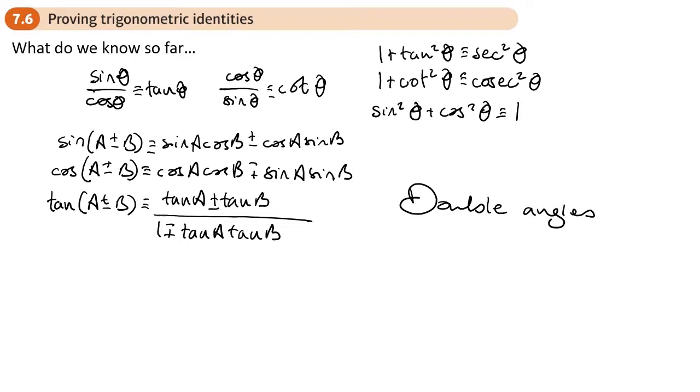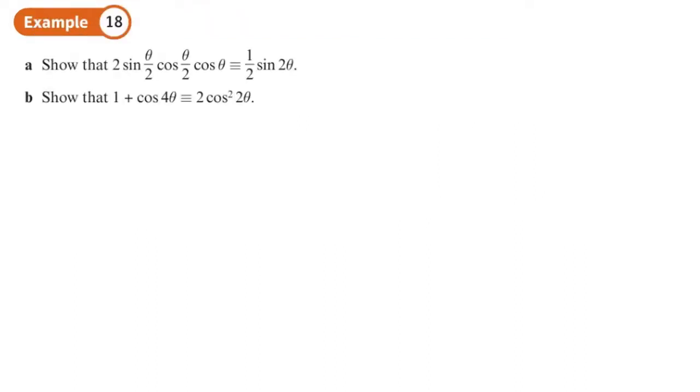So let's have a go at some questions. Part a, show that that statement gives you that statement. Right. Well, the first thing that I notice is that this bit here is just that bit. To me, that's reminding me of 2 sin A cos A, which I know is the double angle for sin.